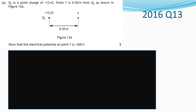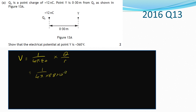2016 paper, question 13, part A. Q1 is a point charge of plus 12 nanocoulombs. Point Y is 0.30 metres from Q1. Show that the electrical potential at Y is plus 360 volts. We start with V equals one over four pi epsilon naught multiplied by Q over R, which equals one over four pi times 8.85 times 10 to the negative 12, multiplied by 12 times 10 to the negative 9 (since our charge is in nanocoulombs), divided by a distance of 0.3 metres, giving a value of plus 360 volts. The plus is implied because we don't have a negative answer.